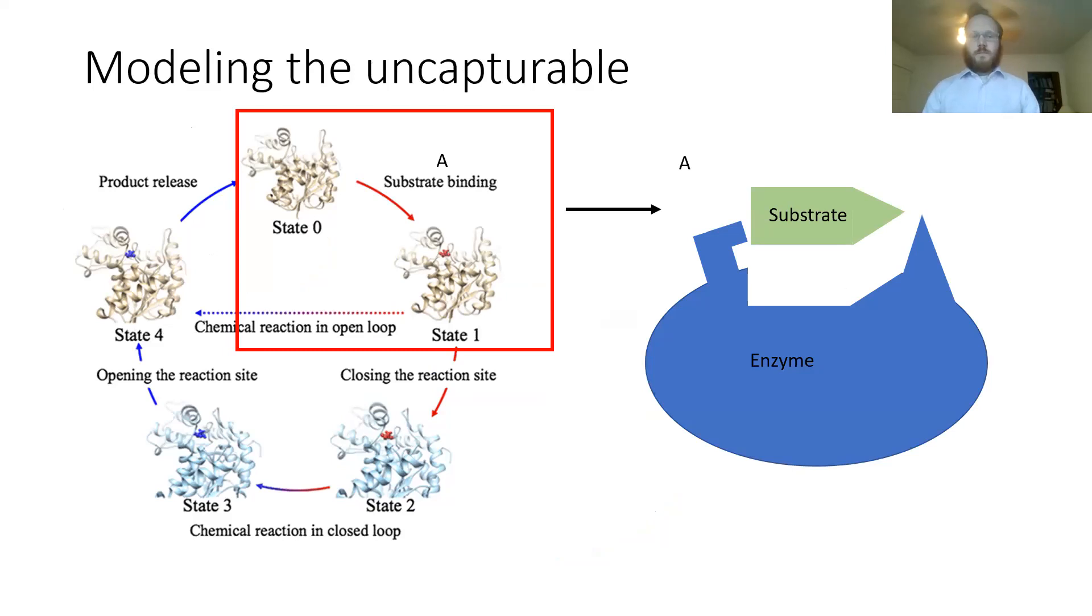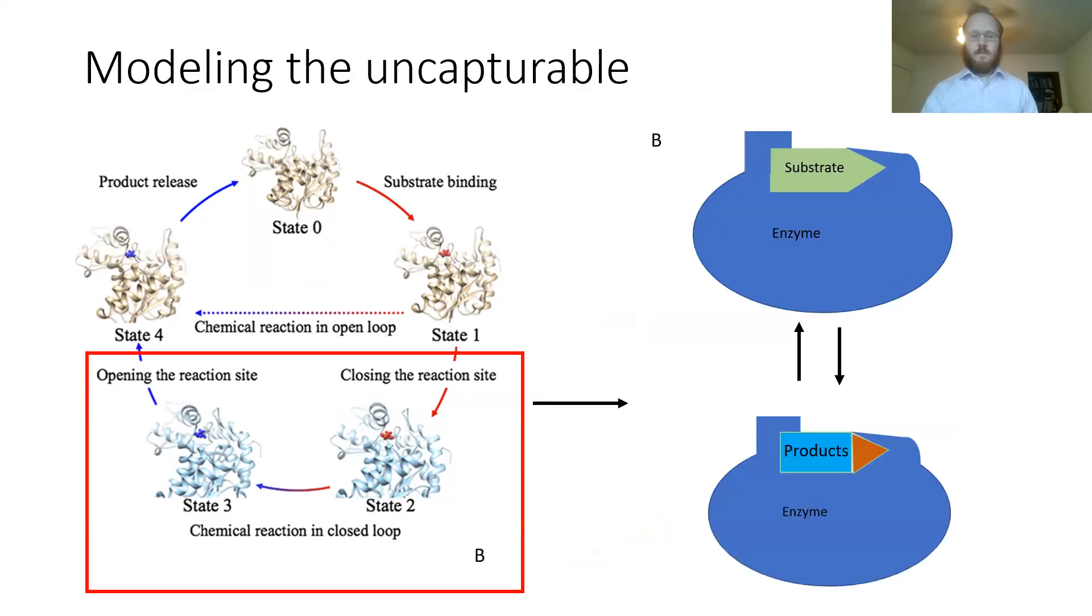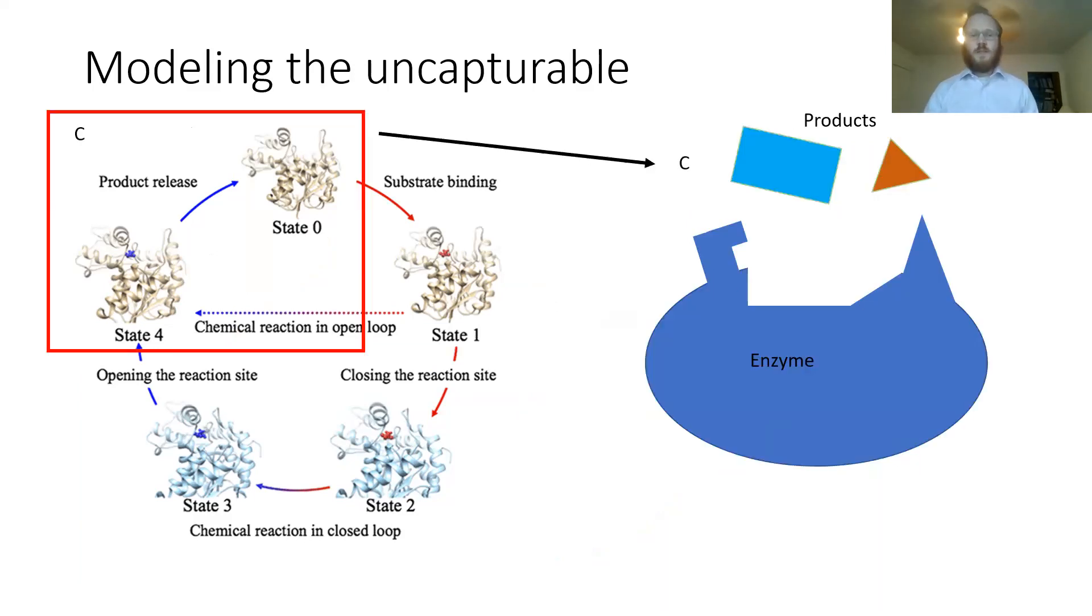What they found with LDH specifically was that from going from the enzyme without any substrate to binding the substrate, it was in an open conformation so the substrate could easily come in. Then it closed for the catalysis to move from substrate to products. Once the products were formed, it was able to go back to the open conformation to release the products more easily.